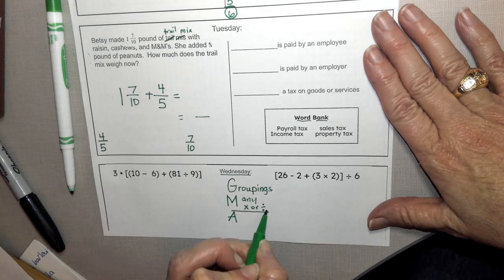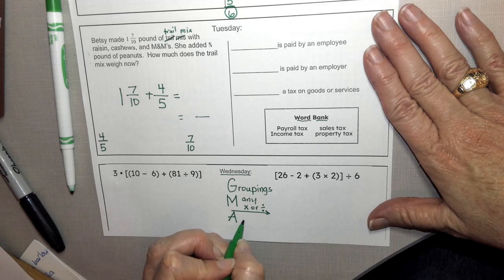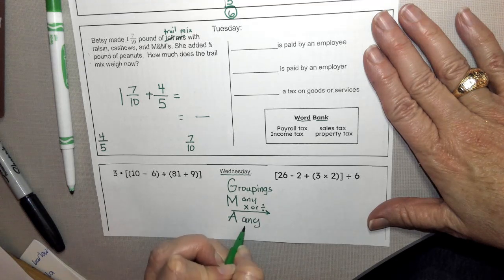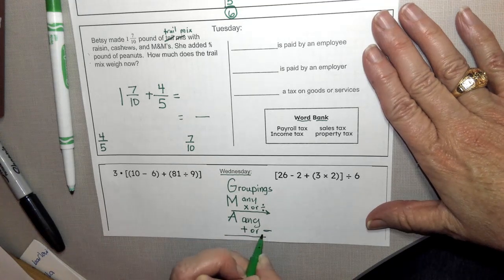And then finally our additive properties, which would be any adding or subtracting, whichever comes first from left to right.